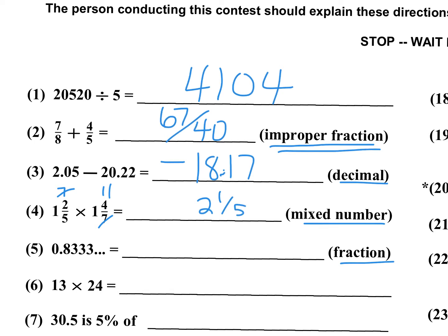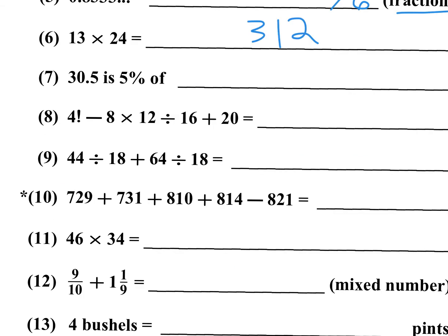Number 5 is 0.83 repeating — that's going to be 5 over 6. You should memorize your common decimals and common fractions; if not, you're going to have to work this one out the long way. Number 6: 13 times 24. 13 times 4 is 52 — write a 2, carry a 5. 13 times 2 is 26; 26 plus 5 is 31.